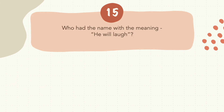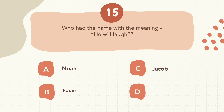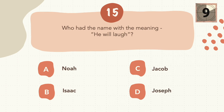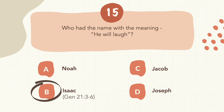Question 15: Who had the name with the meaning 'he will laugh'? The correct answer is B, Isaac.